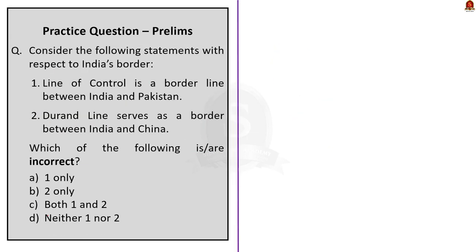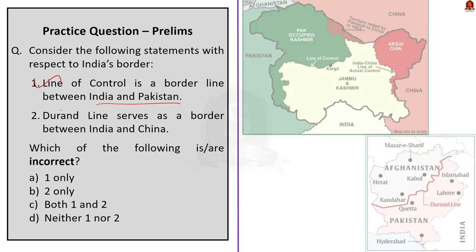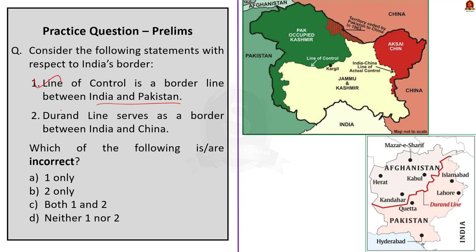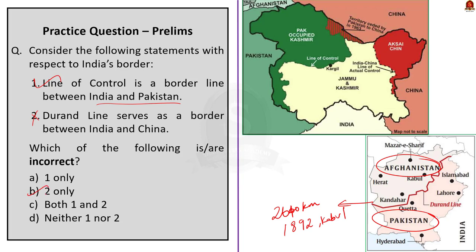Question 5: Consider the following statements with respect to India's borders. Statement 1: Line of Control is a borderline between India and Pakistan — this is correct, as discussed today. Statement 2: Durand Line serves as a border between India and China — this is incorrect. Durand Line is a 2,640-kilometer border between Afghanistan and Pakistan, emerging from an agreement between British India and Abdur-Rahman Khan, the ruler of Afghanistan, signed on November 12, 1892 in Kabul. The correct answer is option B: 2 only.